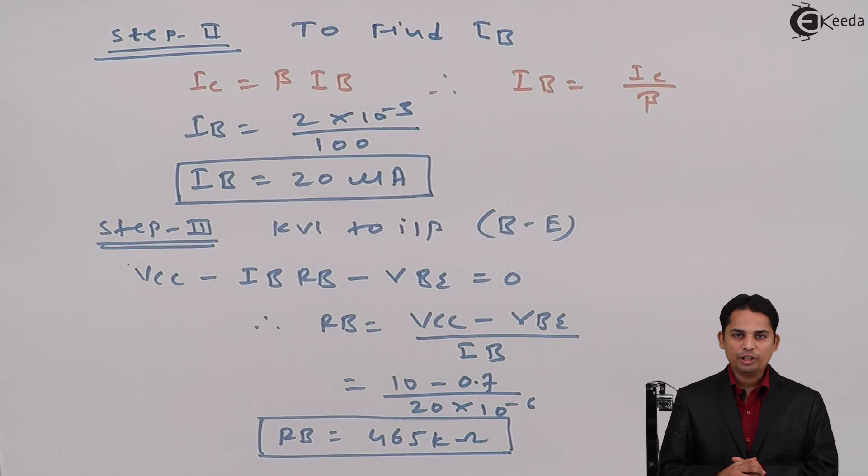From applying three steps, we have got the value of RC and RB very easily. This is how we can calculate any values in the circuit if Q-points are given. Thank you.